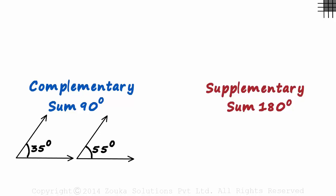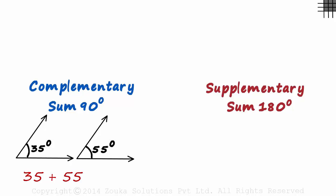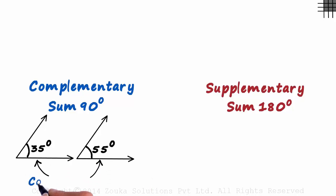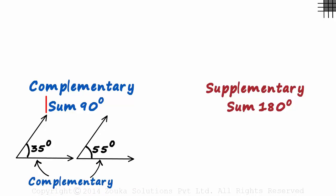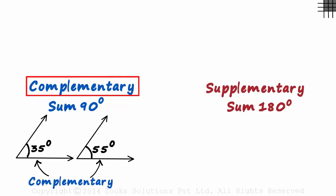Look at these two angles. 35 plus 55 is 90, so yes, they are complementary angles. If the sum of two angles is 90 degrees, then they are complementary.